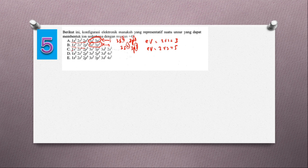Sekarang yang C: 2, 8, 8, 3D4, 4S2. Elektron valensinya 4 tambah 2 sama dengan 6. Yang C juga salah. Kita cari yang elektron valensinya 4.